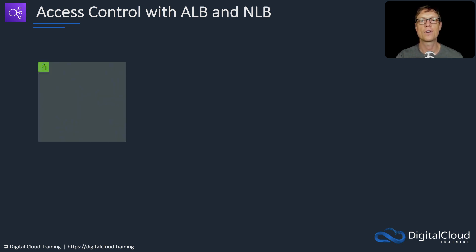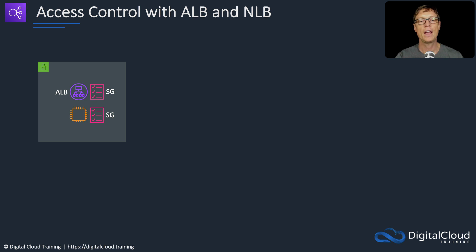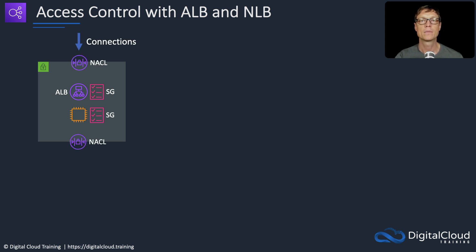Let's look at how we can apply access control. First, we have an Application Load Balancer and it has a security group — you can apply a security group to an ALB. We've then got an EC2 instance and you can apply a security group to the instance. You can use security groups as sources and destinations, so we can lock down the ALB so it only sends traffic to the EC2 instance security group.